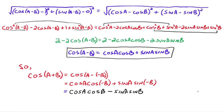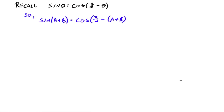Let's move on to the sum and difference identities for sine. Recall that sin θ = cos(π/2 − θ). Those two things are equal, and we're going to use that here.